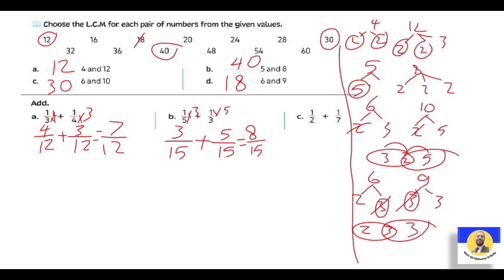Next one letter C: 1 over 2 plus 1 over 7. Two and seven are prime numbers, so LCM = 2 × 7 = 14. الـ two بقت 14: عملنا × 7، يبقى 1 × 7 = seven. والـ seven بقت 14: عملنا × 2، يبقى 1 × 2 = two. نعمل addition: يطلع معنا nine over 14.